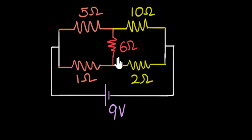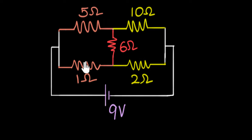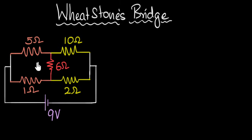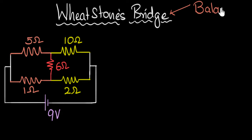What's the speciality? You can see that the resistors here are having the same ratio as the resistors here — one is to two, one is to two. Or you can also say resistors here are in the same ratio as resistors here: one is to five, one is to five. Whenever you have a Wheatstone network like this where the ratios are the same, we say such a network is balanced. We call it a balanced Wheatstone network.